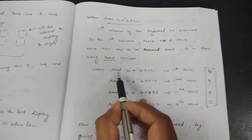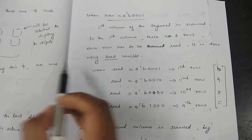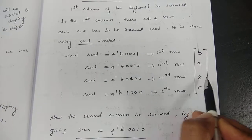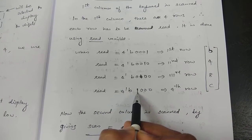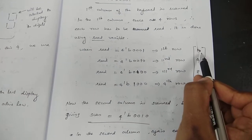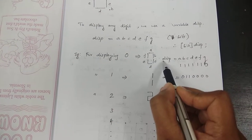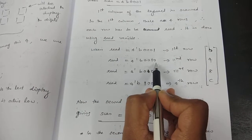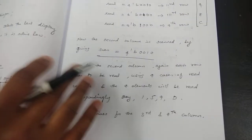The row results are assigned to a variable called 'read'. When scan is 4'b0001 (first column): if zero is pressed, read[0] becomes one; if four is pressed, read[1] becomes one; if eight is pressed, read[2] becomes one; if C is pressed, read[3] becomes one. When read is 4'b0001, digit zero is pressed, so we assign dsp the seven-segment code for zero. If read is 4'b0010, we assign dsp the code for four.